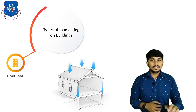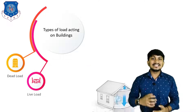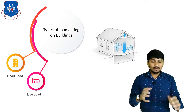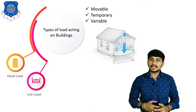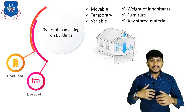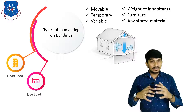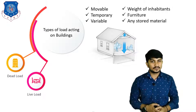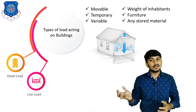Now let's see the second type of load, which is called live load. As you can see in the figure, live load is movable, temporary, and variable type of load. It includes the weight of inhabitants or people living in the building, furniture load, and any stored material load. It is a changeable load, so it is called live load.